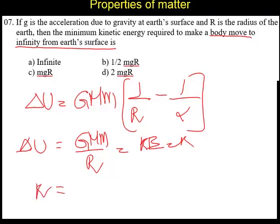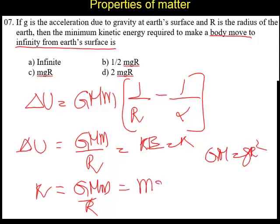K equals GmM by R. But we know that GM is equal to gR squared. Using this relation, we can say this is going to be equal to MgR. So the correct answer is C, mgR.